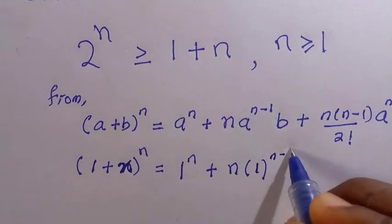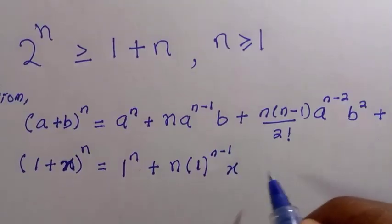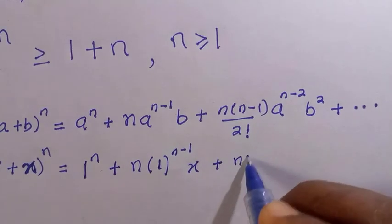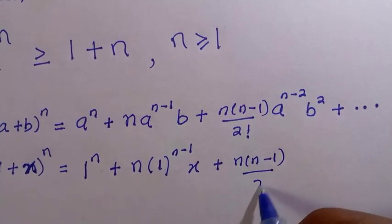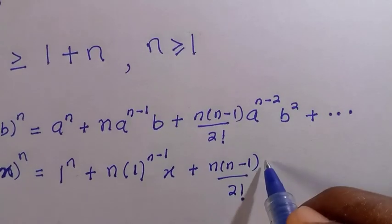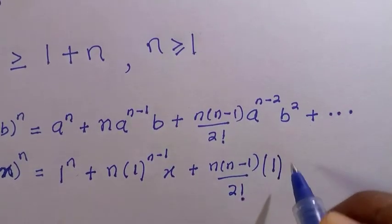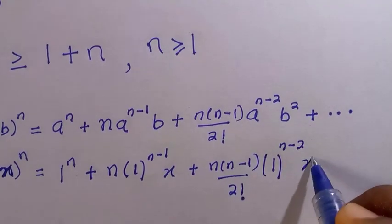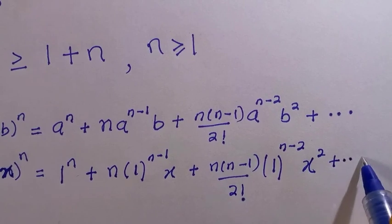to the power of n minus 1, and b is x, plus n bracket n minus 1 divided by 2 factorial, 1 raised to the power of n minus 2, x raised to the power of 2 plus dot dot dot.